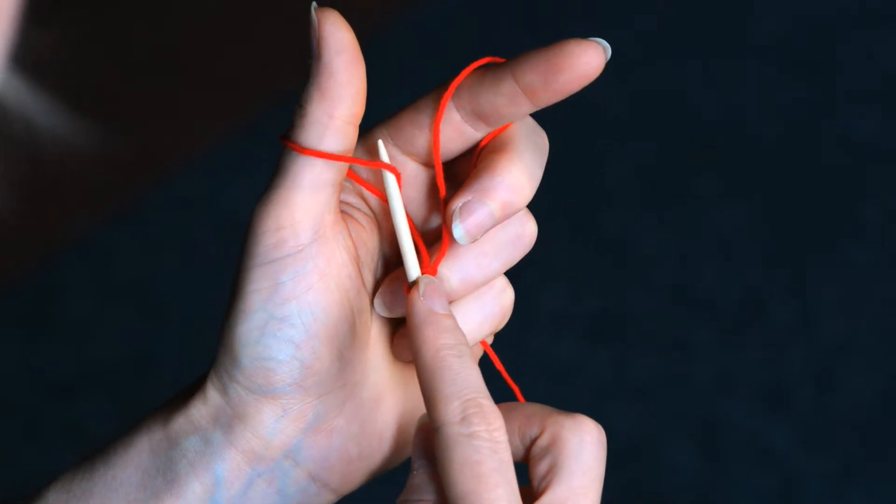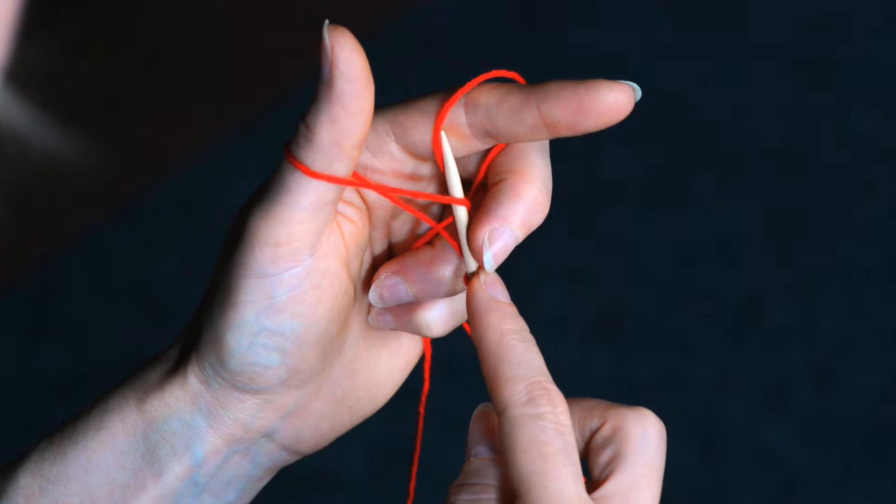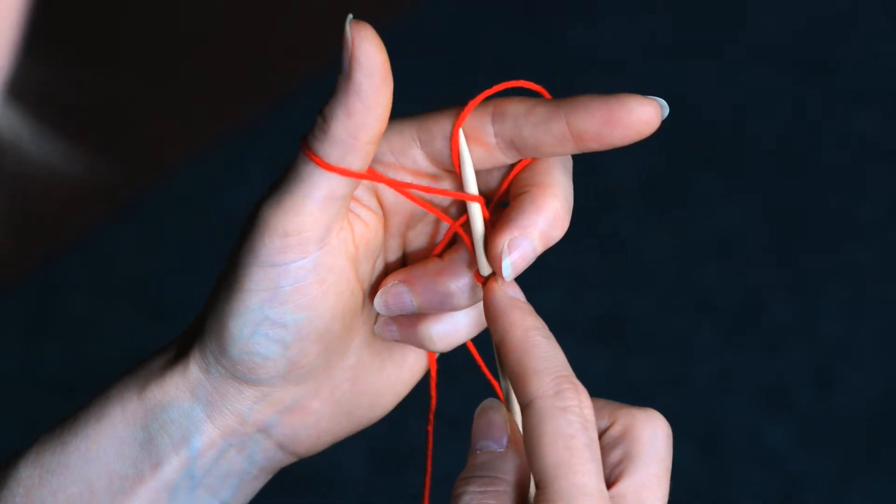Pick up the loop from your thumb, go over to the yarn on your index finger, and pull that back through.